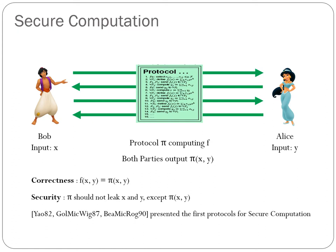The protocol should not leak anything about the private inputs besides whatever is computable from the output. The works of Yao, GMW, Beaver, Micali and Rogaway presented the first few protocols for secure computation. Since then, secure computation has found numerous applications in privacy-preserving machine learning, blockchains, and many more.